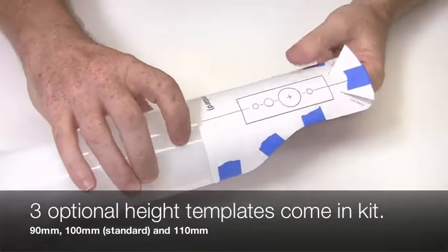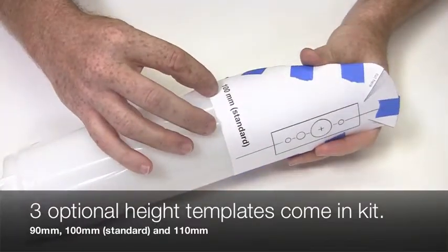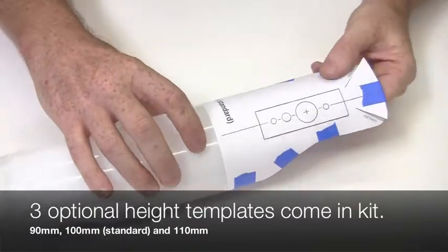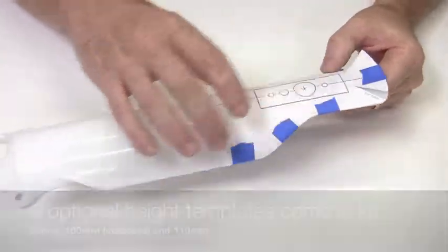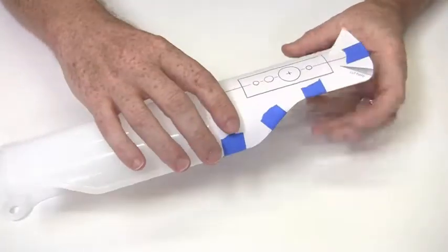So in step two, you've chosen your correct template for your size and weight. I've gone ahead and went with the hundred millimeters, which is our standard. And I've cut out, using scissors or Xacto knife, I've cut out the template, and this is a critical step.